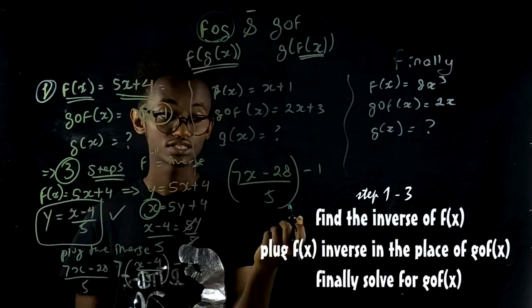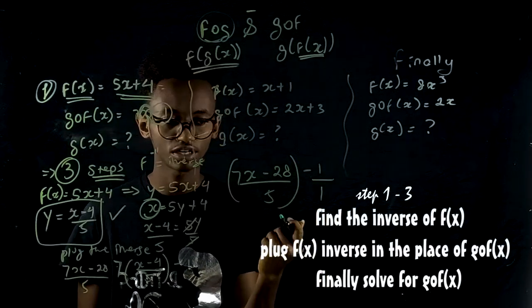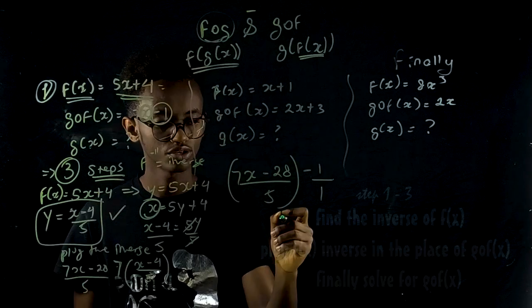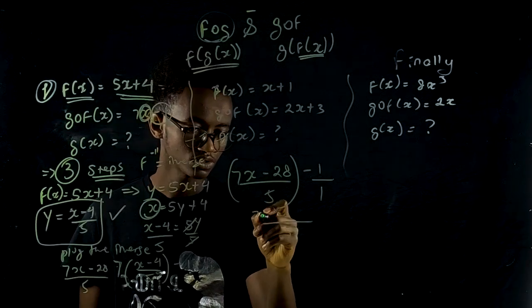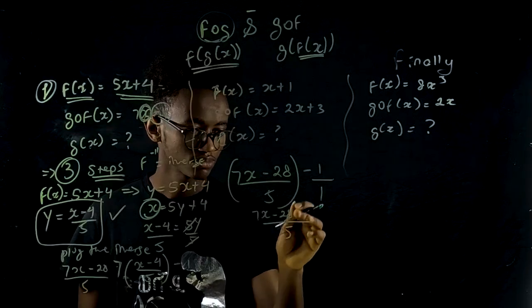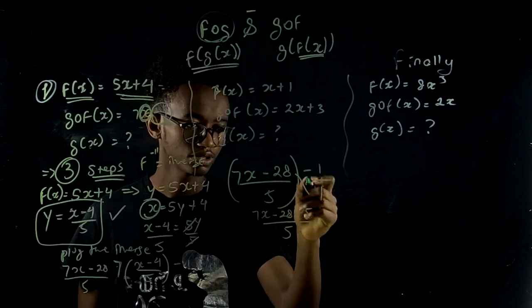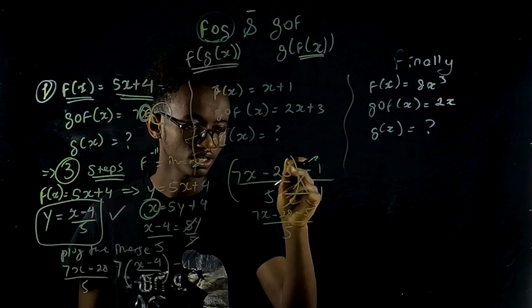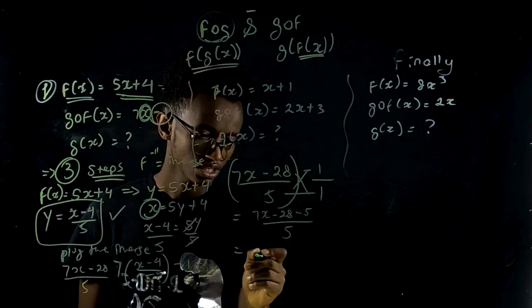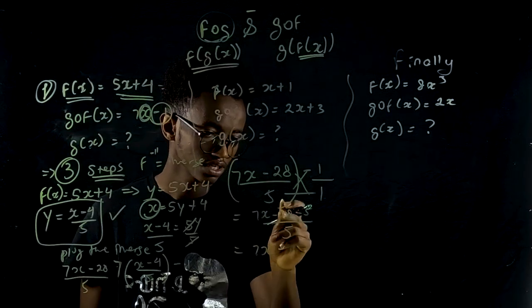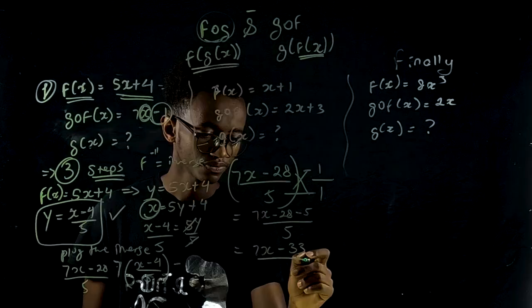7x minus 28 over 5, and minus 1 over the denominator. 7x, then minus, minus has mint over denominator, minus 33 now, over 5. Common factor: the numerator gives x minus 5. So the numerator: x, denominator: minus 5.